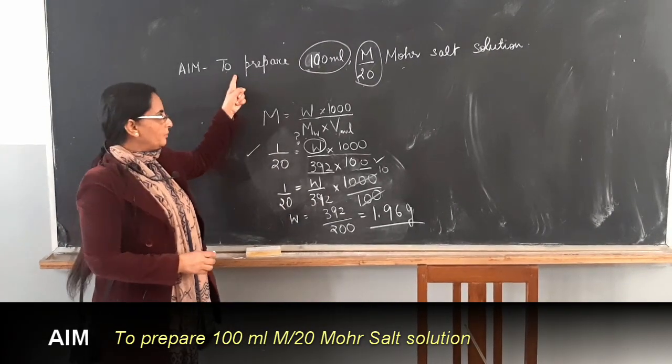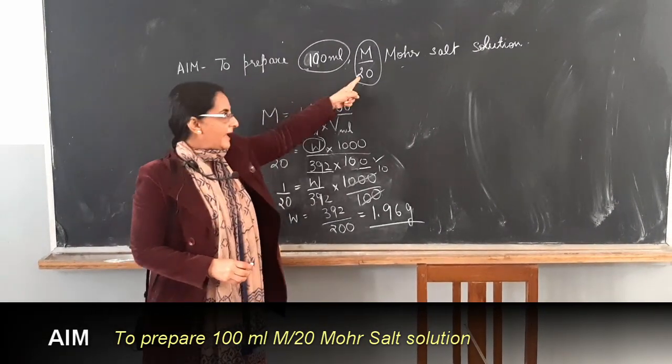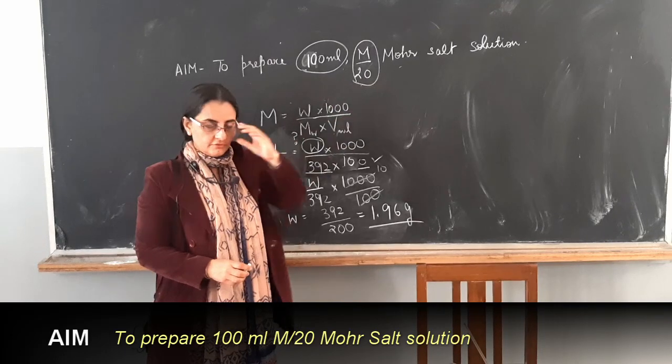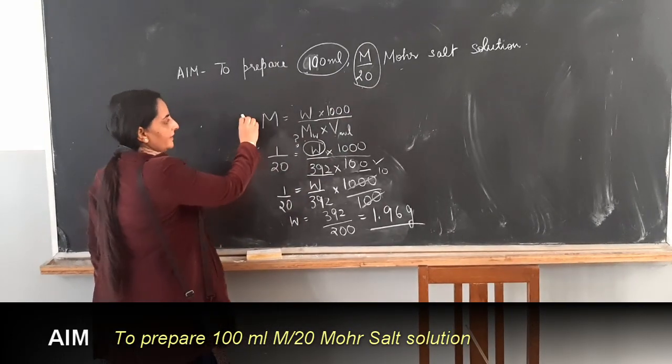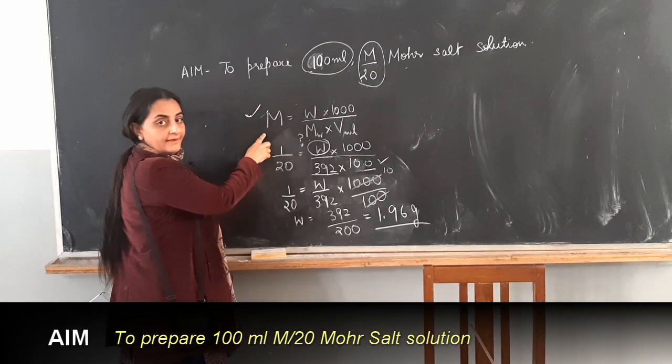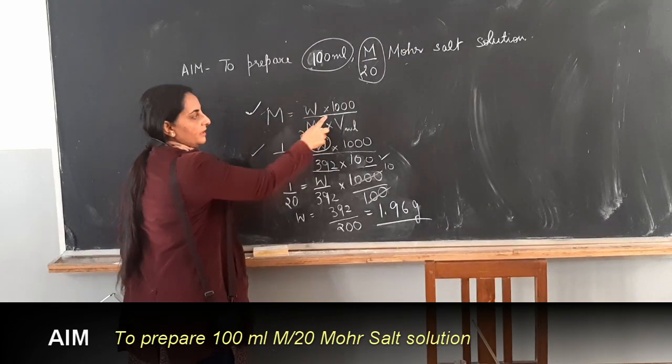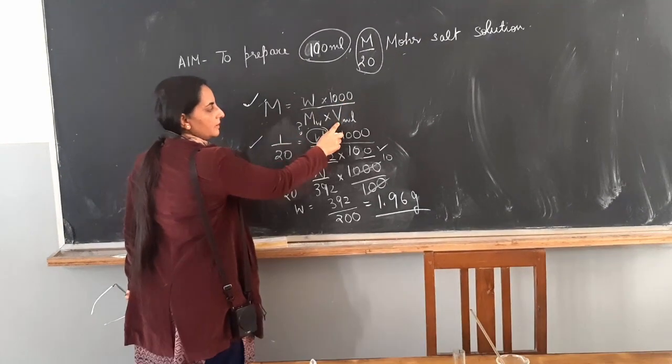Welcome to today's discussion on how to prepare 100 ml N by 30 molar solution. For that I have a formula: molarity is given weight upon molecular weight into 1000 upon volume in ml.